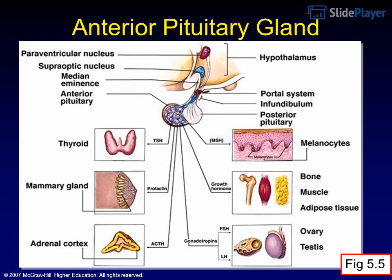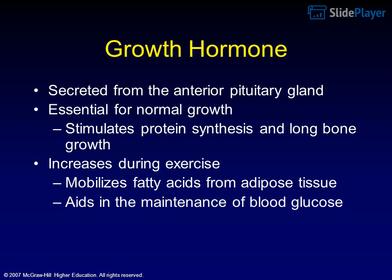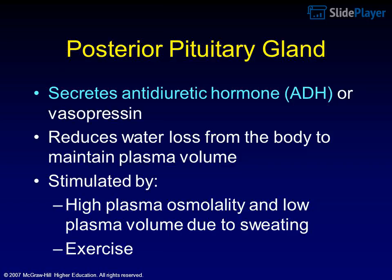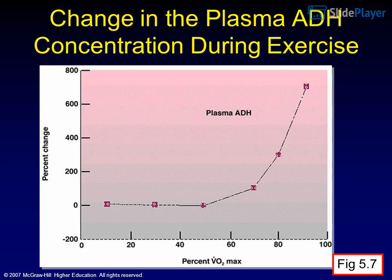Growth hormone is secreted from the anterior pituitary gland. It is essential for normal growth, stimulates protein synthesis and long bone growth, increases during exercise, mobilizes fatty acids from adipose tissue, and aids in the maintenance of blood glucose. The posterior pituitary gland secretes anti-diuretic hormone (ADH or vasopressin), which reduces water loss from the body to maintain plasma volume. ADH is stimulated by high plasma osmolality and low plasma volume due to sweating and exercise.